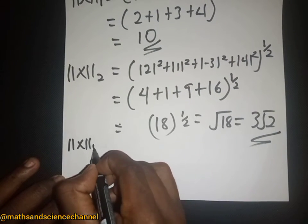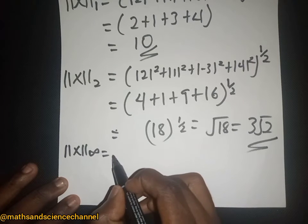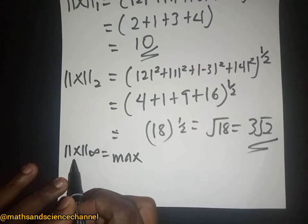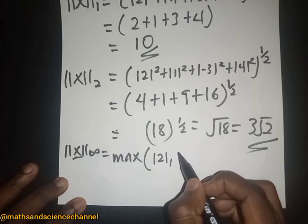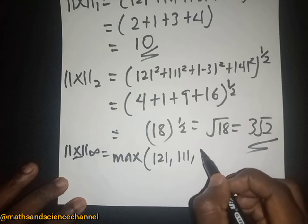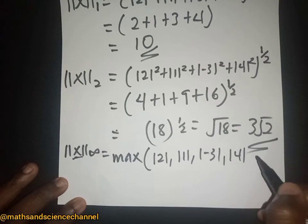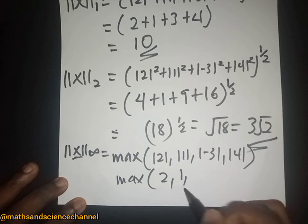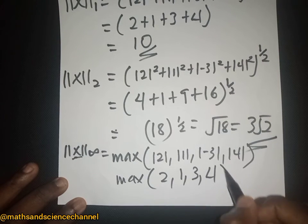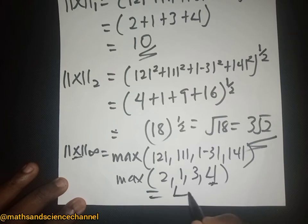For the norm of infinity, we take the maximum of the absolute values of the vector entries. We have the absolute of 2, absolute of 1, absolute of -3 which is 3, and absolute of 4. So the values are 2, 1, 3, and 4. The maximum here is 4, and therefore the infinity norm equals 4.